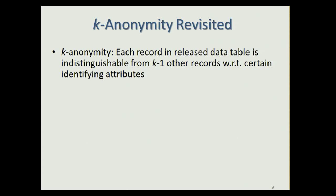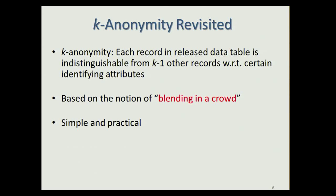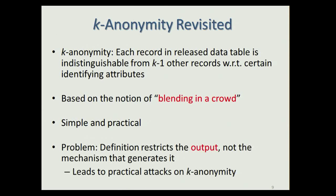Towards this goal, let us revisit k-anonymity since it is both simple and practical. K-anonymity requires that each record in the released data table is indistinguishable from k minus one other records with respect to certain identifying attributes. It is based on the notion of blending in a crowd. However, the definition restricts the output of the mechanism but does not restrict the mechanism that generates the output, and this has led to practical attacks on k-anonymity.